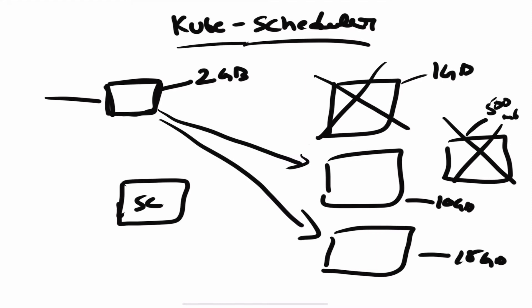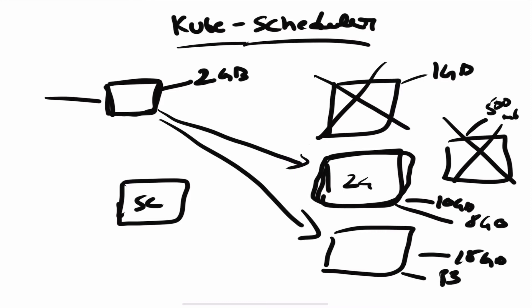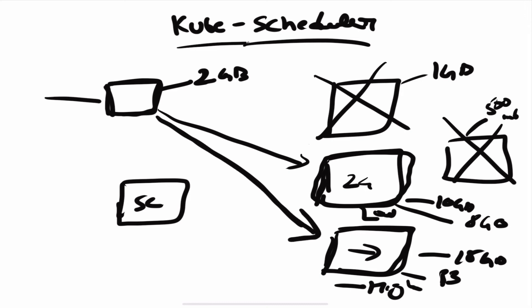Now comes the scoring part. Scoring is done based on the resources that would be left after scheduling the pod. If I schedule the pod on the 10 GB node, 8 GB would remain. On the 15 GB node, 13 GB would remain. The scheduler assigns a score to each node, and the node with the most remaining resources gets the highest score. So the pod would be scheduled on the 15 GB node.